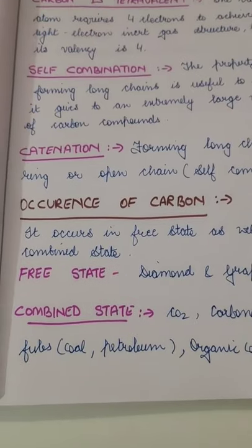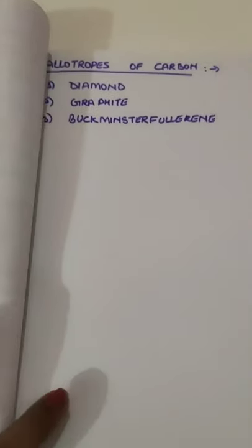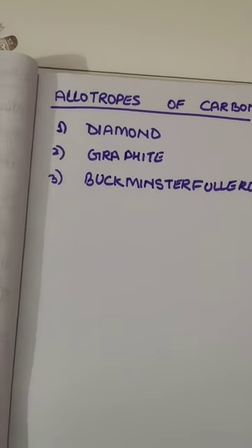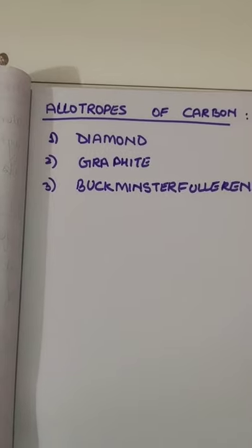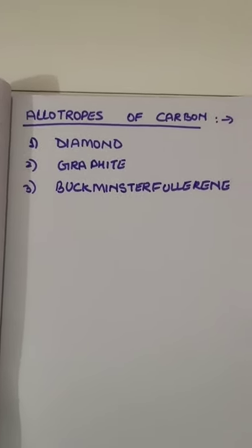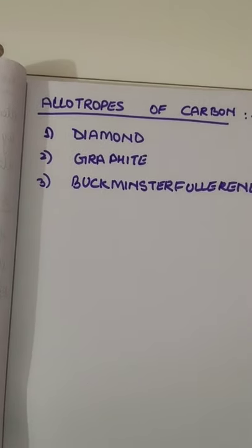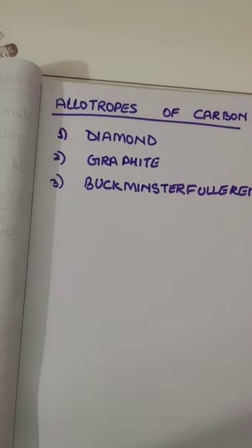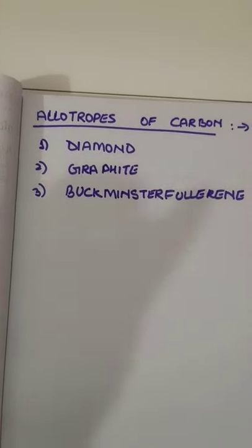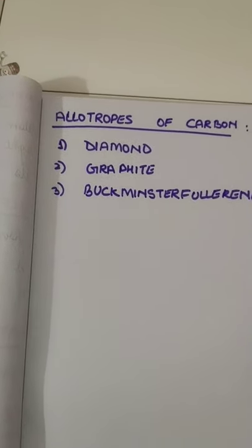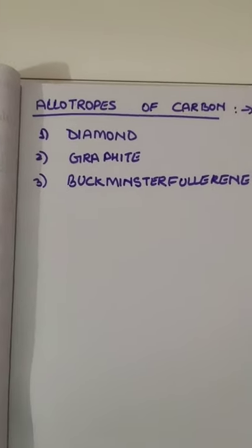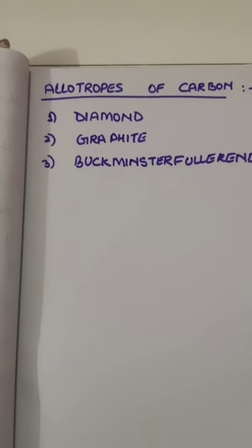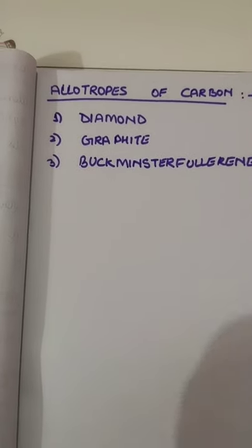Carbon has three allotropes: diamond, graphite, and buckminster fullerene. Allotropy is the property of an element occurring in different physical forms with the same chemical properties but different physical structures. Diamond is very hard and graphite is soft, but both are pure carbon. If you burn diamond or graphite, you get no residue — only CO₂ is produced, because carbon combined with oxygen forms CO₂.